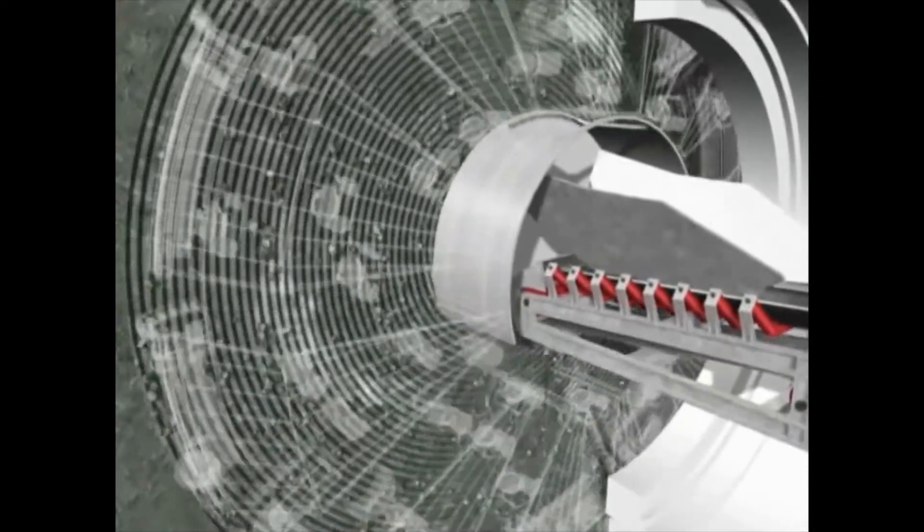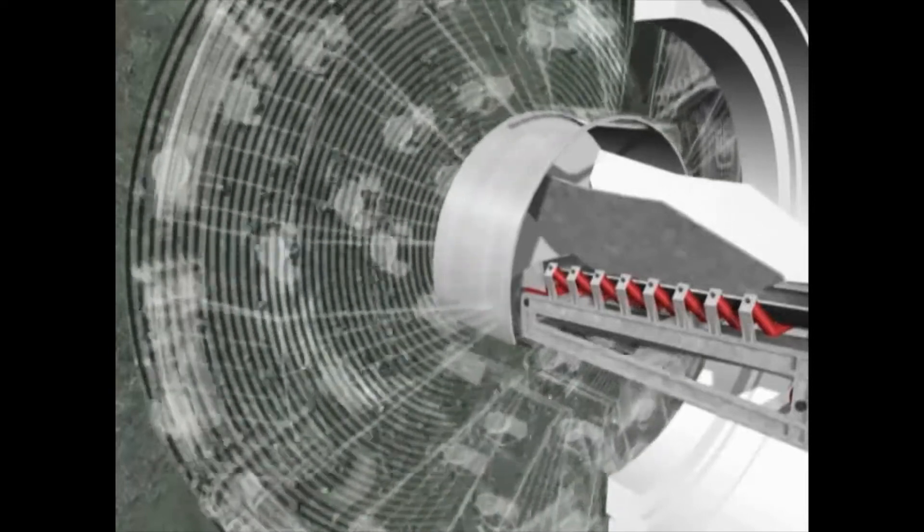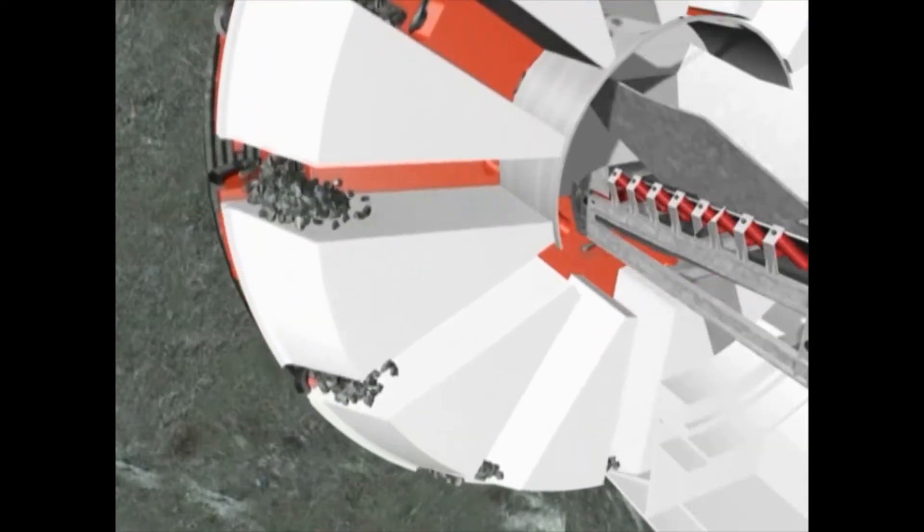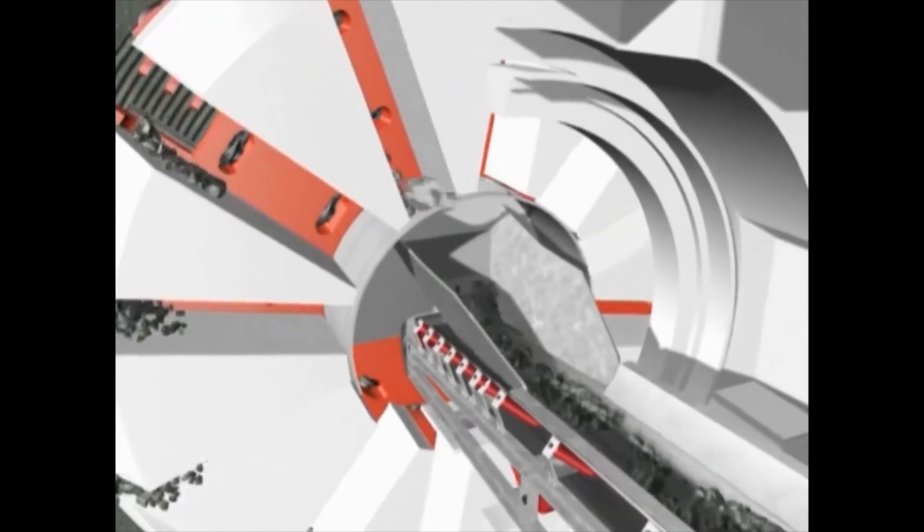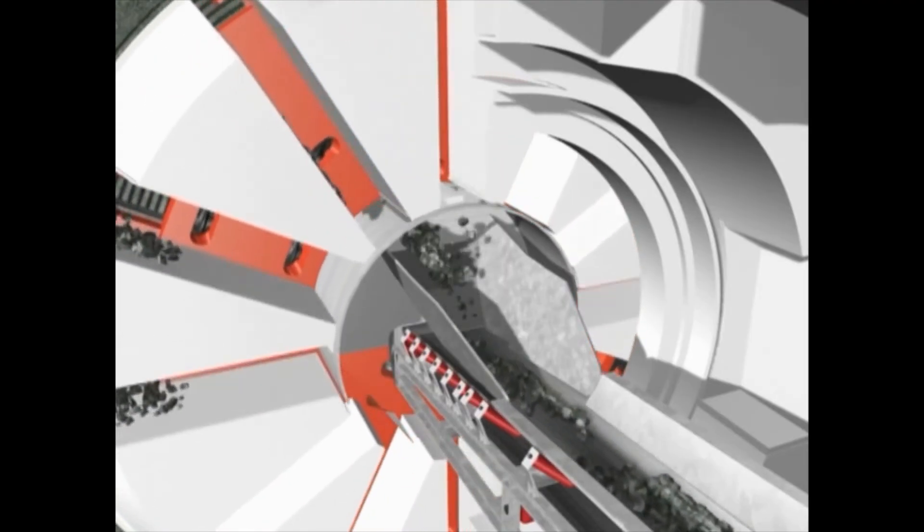The excavated material, the so-called chips, falls into the tunnel bottom. Twelve buckets on the cutter head periphery pick up the muck. Via rotation of the cutter head, the muck will be lifted and transferred through the chutes into a conveyor, which is located in the center of the cutter head.